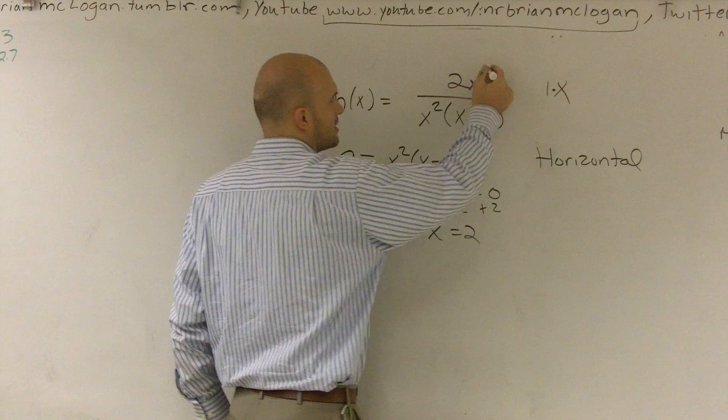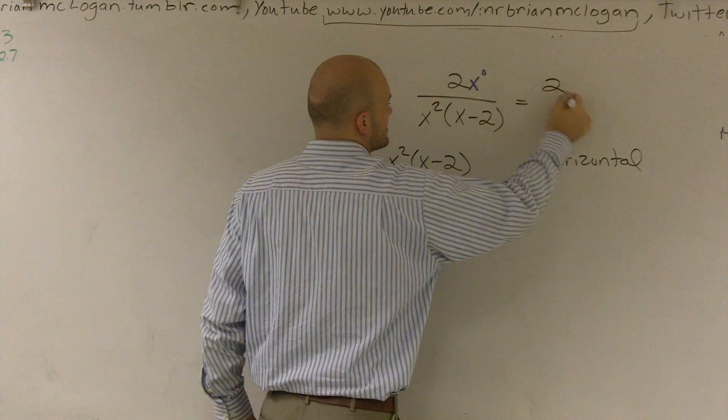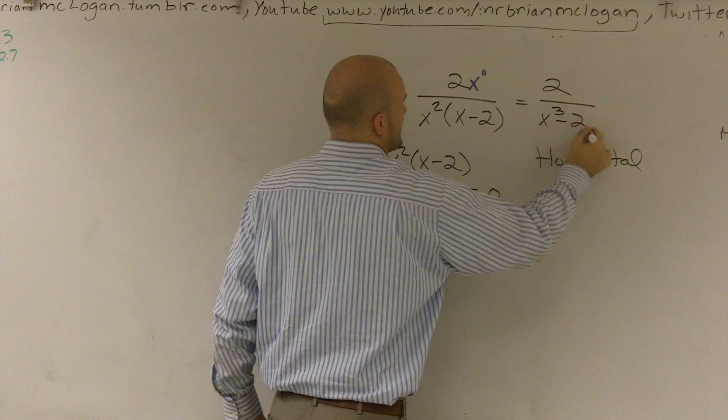And the reason why I want to write this is because we want to compare. And if I was to FOIL this out, we can distribute this 2 over x cubed minus 2x.